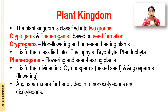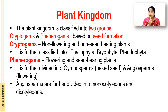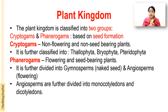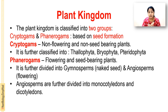Next is phanerogams — they are flowering and seed-bearing plants. Phanerogams are further divided into gymnosperms and angiosperms. Gymnosperms have naked, uncovered seeds. Angiosperms are flowering plants with enclosed seeds — fruits contain the seeds. Angiosperms are further divided into monocotyledons and dicotyledons.